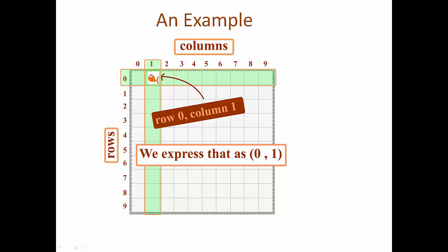So the location of this fish would be set as row 0, column 1, or expressed as the ordered pair 0, 1.